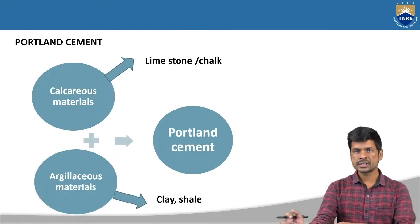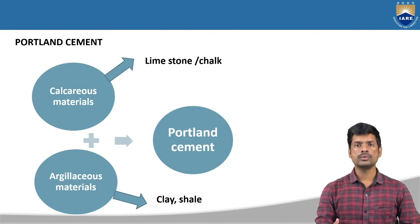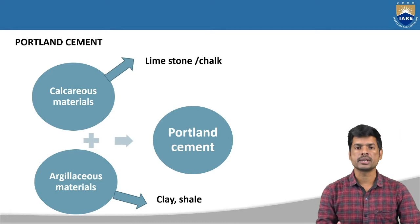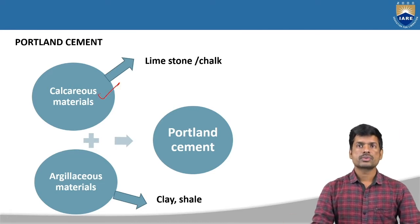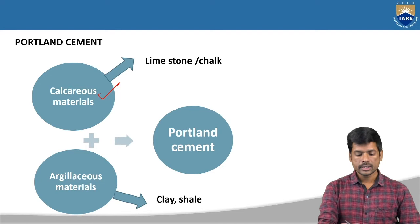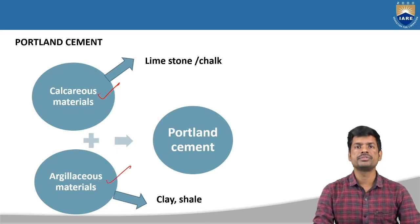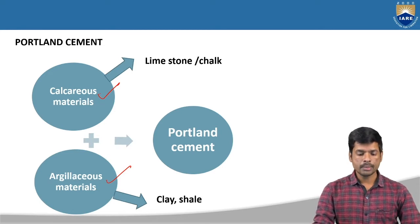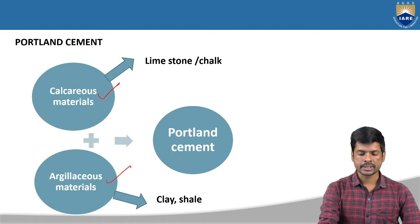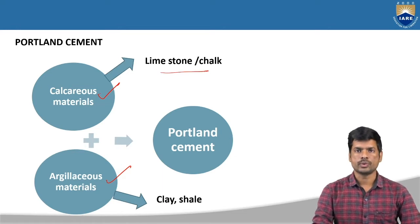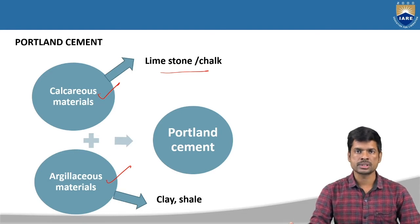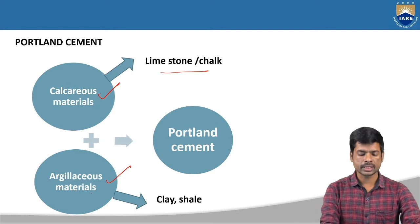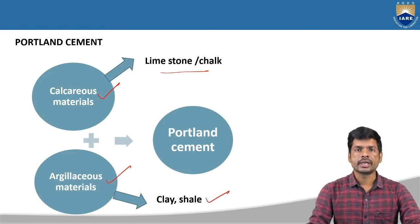Coming to the Portland cement definition clearly, it is going to have different types of materials. The major materials are calcareous materials and argillaceous materials — these are the two different types of materials majorly present in cement. Examples for calcareous materials are limestone or chalk. The example for argillaceous materials is clay and shale.